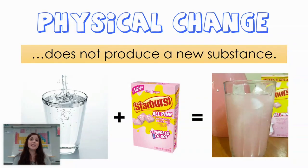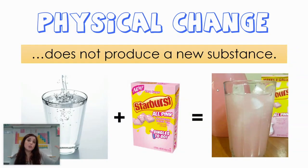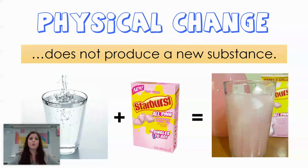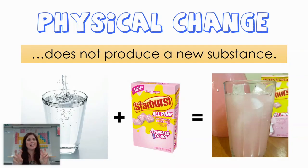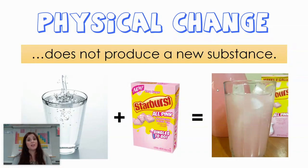The reason why it's a physical change is because that liquid still has water molecules and it still has those sugar molecules. All we did was mix them together, creating a combination of the two. Both substances still retain their own properties. I didn't produce anything new — I still have water and I still have sugar, just combined together with no totally new substance formed.